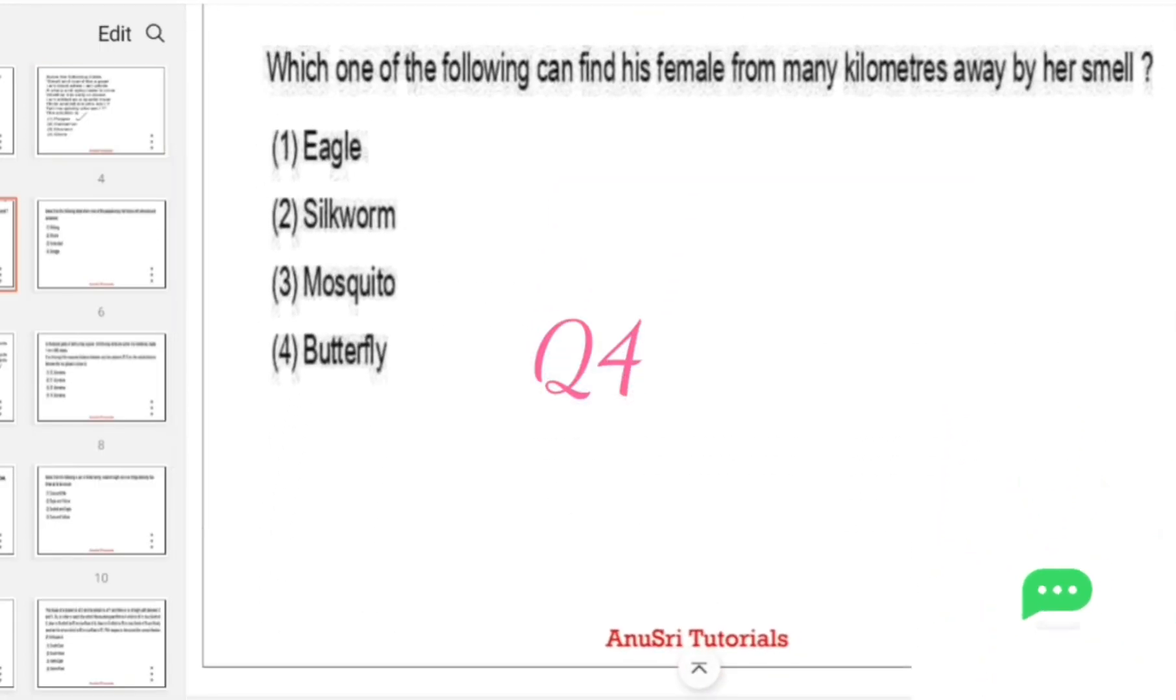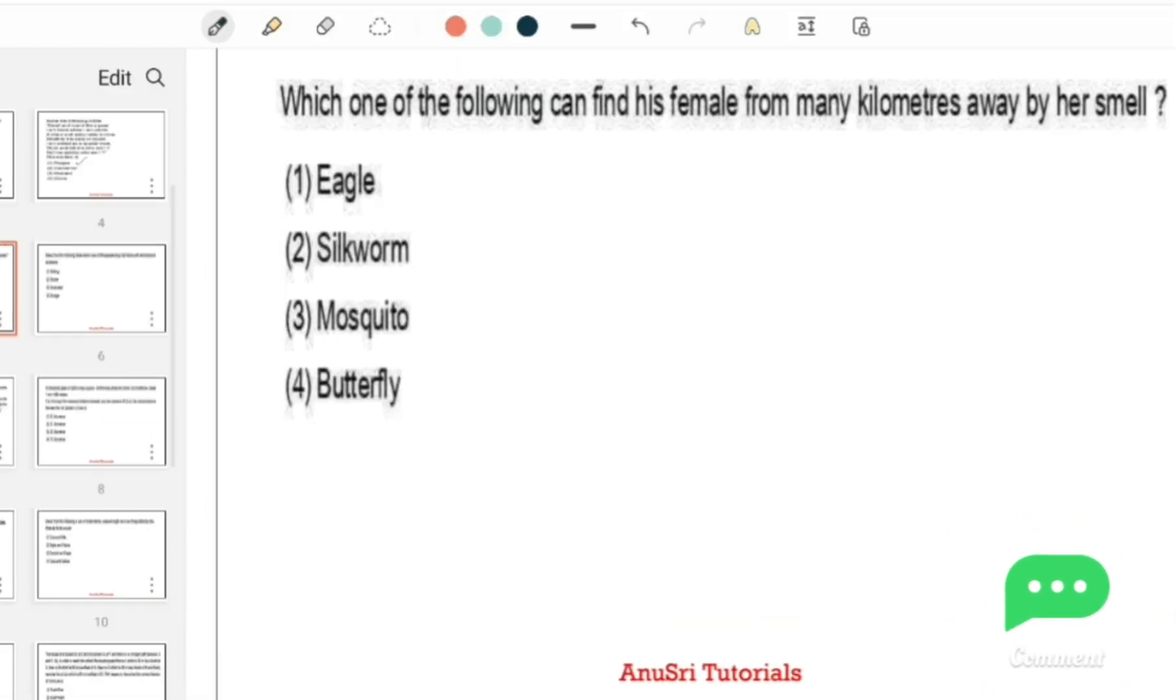Which one of the following can find its female from many kilometers away by her smell? Options: Eagle, Silkworm, Mosquito, Butterfly. Silkworm is the correct option.